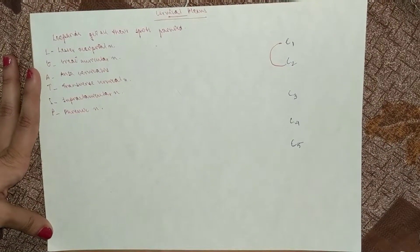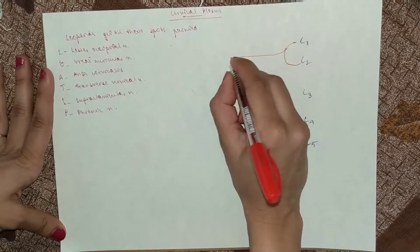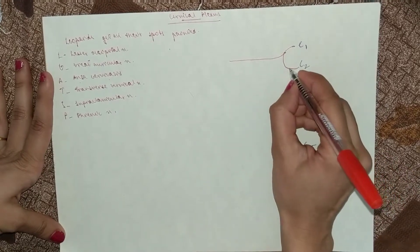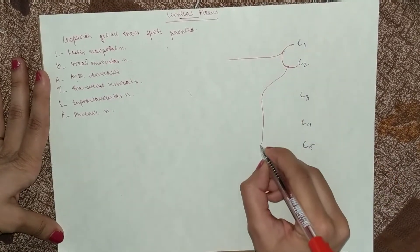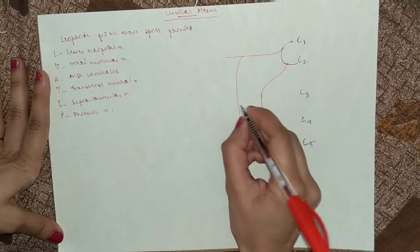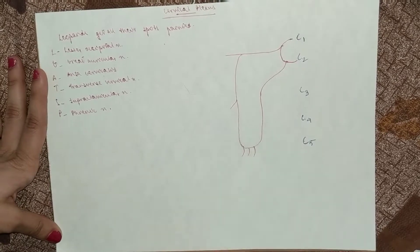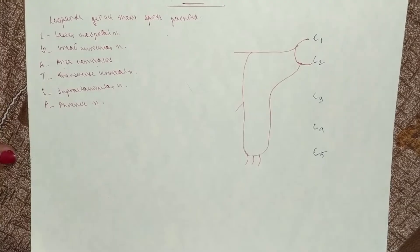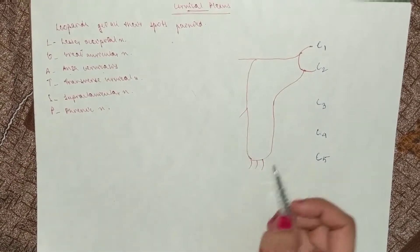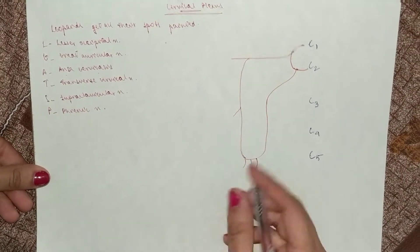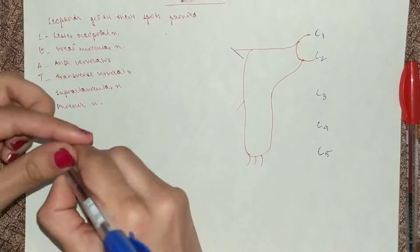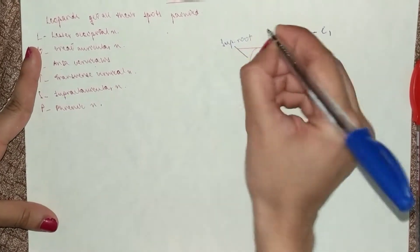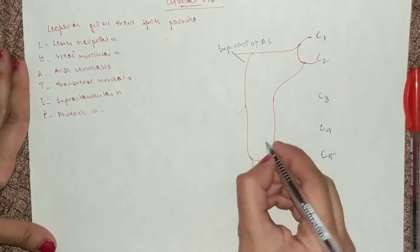C1 and C2 are connected in the sense that they contribute to the ansa cervicalis. These roots supply the anterior muscles of the neck. Here you've got the superior root of the ansa cervicalis, and here you've got the inferior root of the ansa cervicalis.